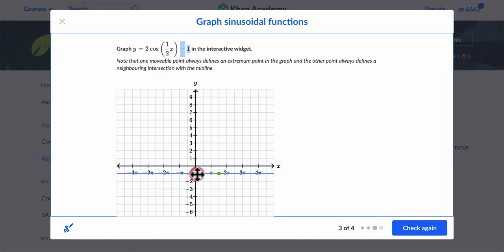So one easy way to fix that is to swap the order. Swap that order. So now, I didn't actually do it. Here we go. Now my extremum point is right here, and now my midline point is right here.